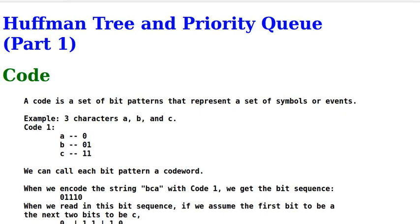In a previous video, we discussed the priority queue and its implementation. In this video, part 1 of Huffman tree and priority queue, we discuss the Huffman tree and how to use a priority queue to implement it. In the next video, part 2, we discuss the C/C++ coding of the implementation.